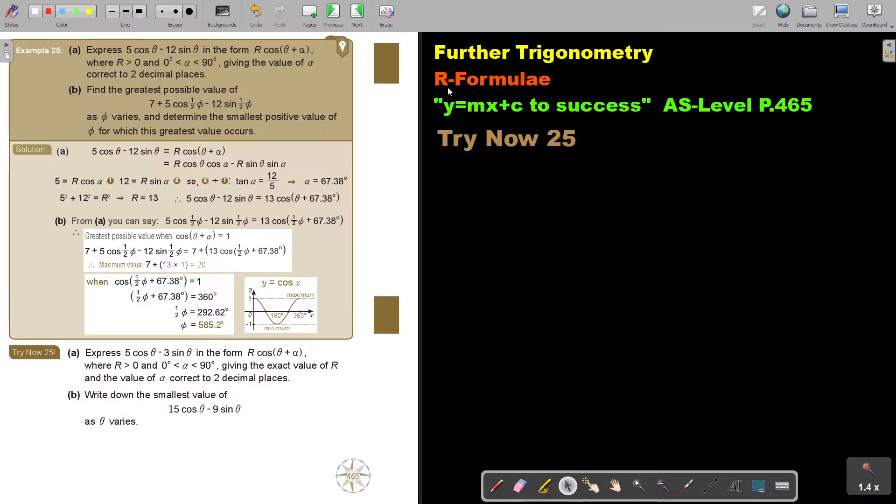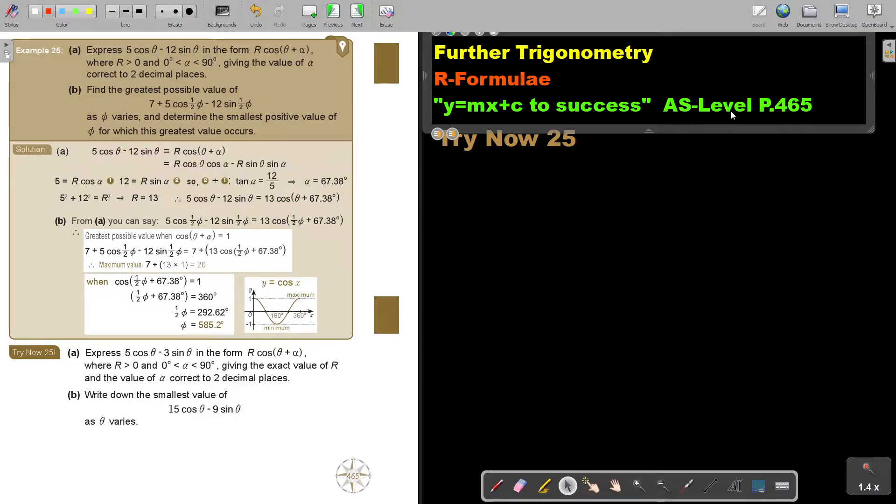This is the last video I'm going to do on R formula. You will find this on page 465 in the Namibia AS level mathematics textbook Y equals MX plus C to success.